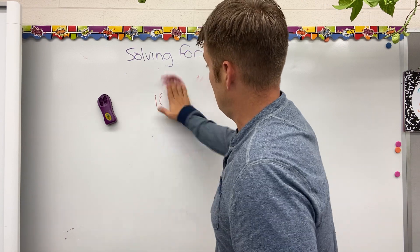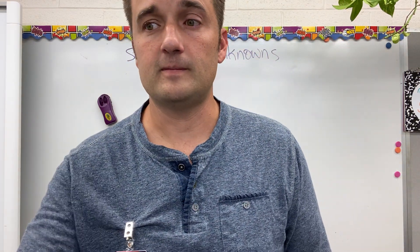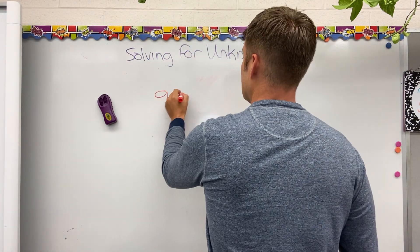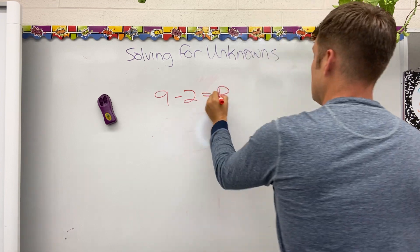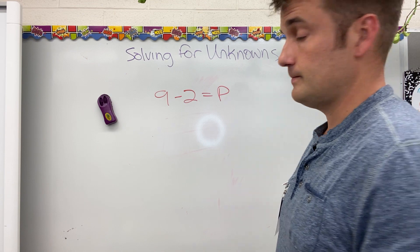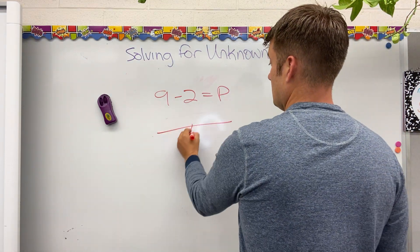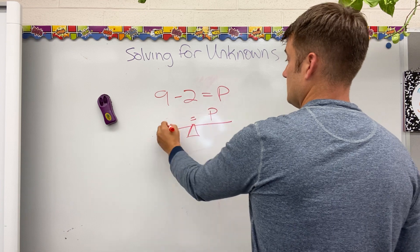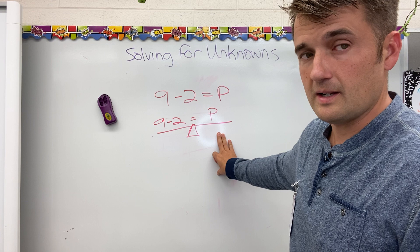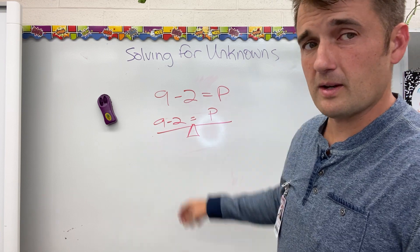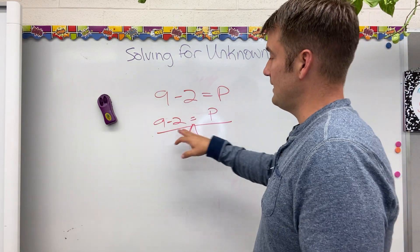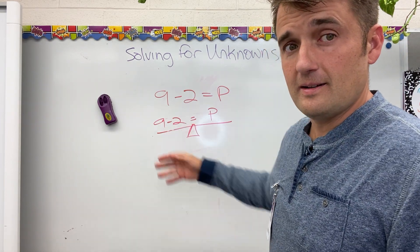Last one. 9 minus 2 equals P. Seesaw. Equal sign. P, 9 minus 2. P is all by itself. I can't figure out P. It doesn't help me to say, both sides of my equation must equal P. I'm saying P a lot. So, 9 minus 2. I can figure out. That will give me a number that I know.